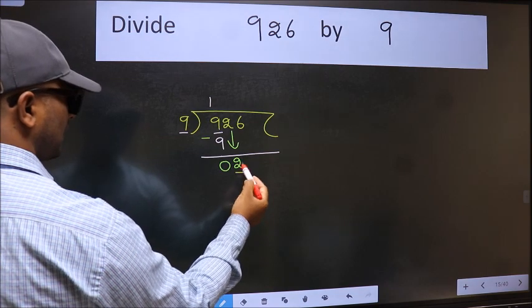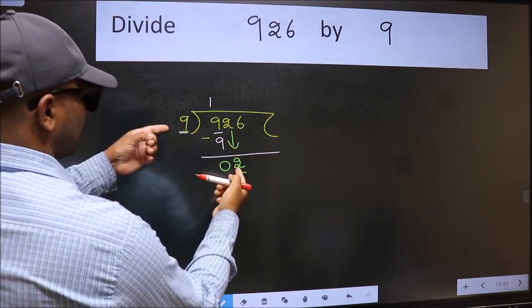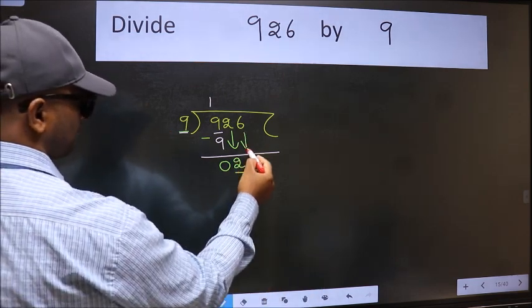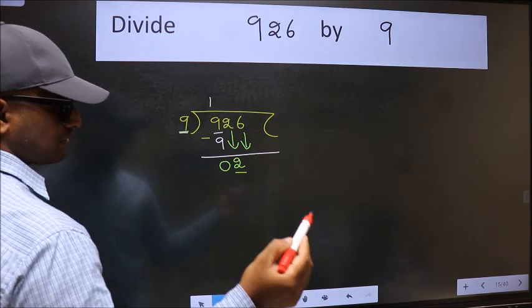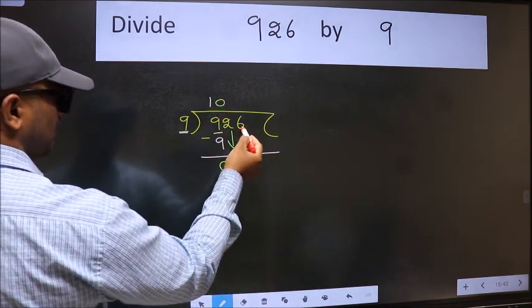Now here we have two and here nine. Two is smaller than nine, so we should bring down the second number. And the rule to bring down the second number is we should put zero here, then only we can bring this number down.